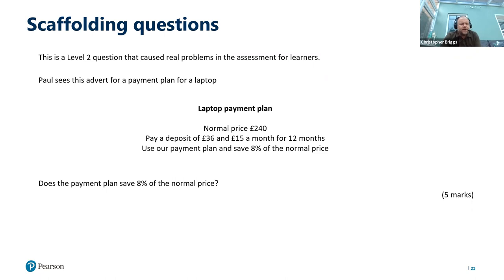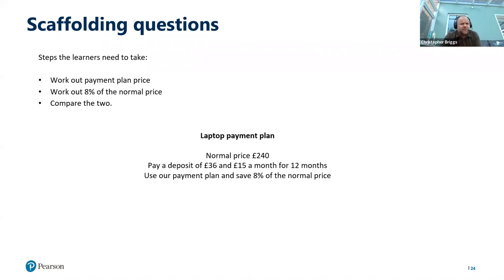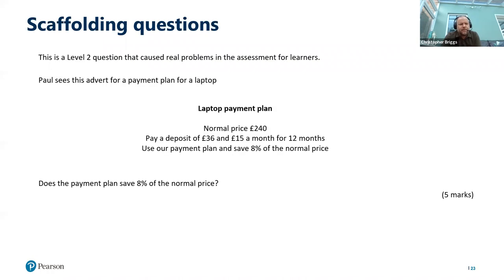Here again is a level two question that caused real problems in the assessment. Paul sees a payment plan for a laptop: normal price £240, pay a deposit of £36 and £15 a month for 12 months, and the advert says 'use our payment plan and save 8% on the normal price.' The question is: does the payment plan save 8% of the normal price? Breaking this down with scaffolding, learners need to: work out the payment plan price (£15 × 12 + £36), work out what 8% of £240 is, compare the two, and then give a yes or no answer.